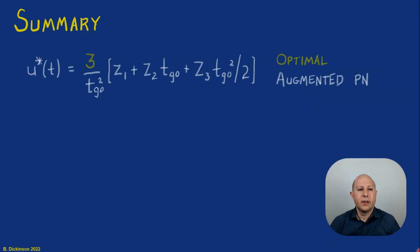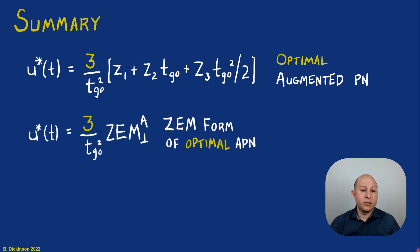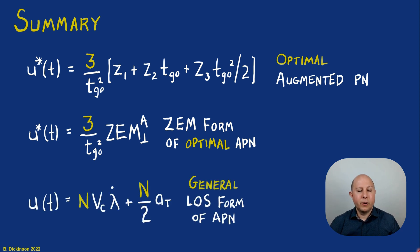In summary, we have our optimal augmented pronav with the optimal gain of three. We have its zero effort miss form, where we've substituted in our formula for zero effort miss. By the way, this is the same formula as what we determined in the previous section. We just have different definitions now of ZEM. And in general, if we don't want to use the optimal gain value of three, but maybe some other gain, well, we replace that with N, and that's our general form of augmented pronav.